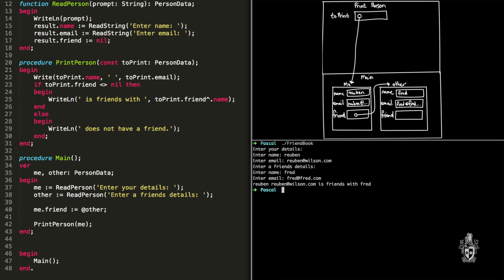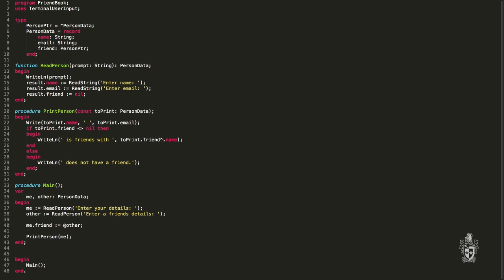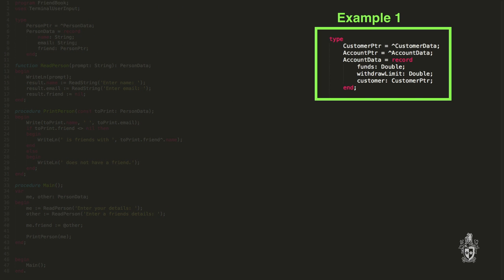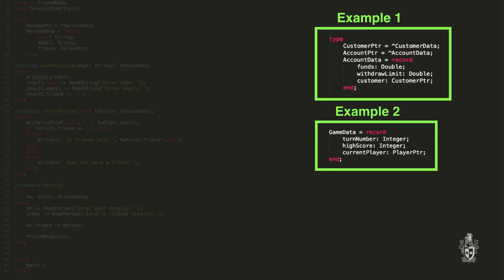There are a couple of extra examples. The first is a bank account: the bank account has a customer pointer, so you could have multiple accounts that all reference the same one customer. The other example is a player's turn in a game: we have multiple players and they take turns, and we can have a current player variable that is a pointer to one of the players. That way we can change which player the current player is, and from the game's perspective there is always a current player.